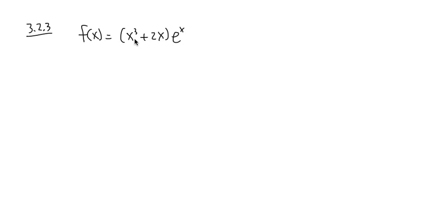This is the product of two functions - specifically, a polynomial times an exponential function. We must use the product rule. There's no way to simplify first before taking the derivative.